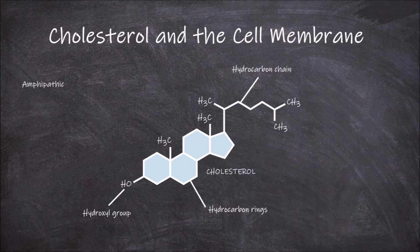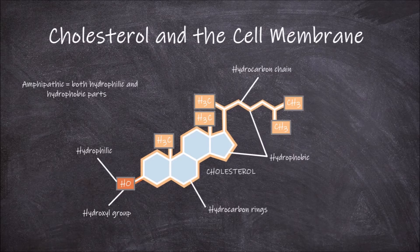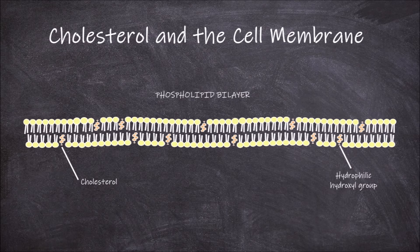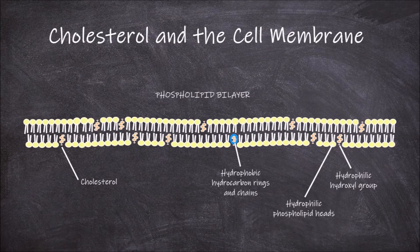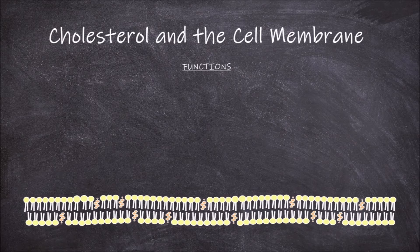Cholesterol is amphipathic, which means part of it is hydrophilic and other parts are hydrophobic. The steroid portion and hydrocarbon tail are hydrophobic, whilst the hydroxyl group is hydrophilic. Within the phospholipid bilayer, the cholesterol sits in the membrane with the hydroxyl group, which is polar and hydrophilic, aligned with the polar and hydrophilic phospholipid heads. The hydrophobic steroid rings and hydrocarbon chain portions are embedded in the hydrophobic portion of the membrane with the phospholipid fatty acid tails.